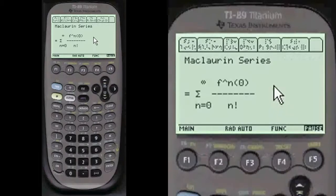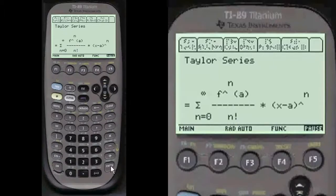Here's McLaren series formula. N is the number of derivatives you're taking. I've stopped it at 5 in these programs and A is the point on the function where you're going to approximate the slope of a line.